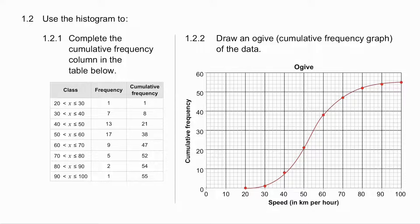1.2.1, complete the cumulative frequency column. So it's 1, then you add the 7, then you add the 13, all the way up until you get a total of 55.